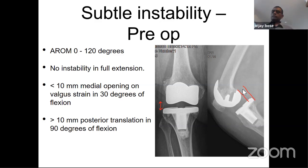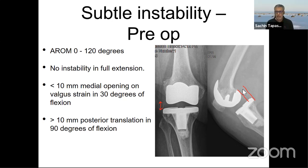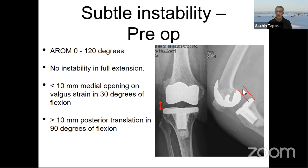Any comments? Sachin, since you made such a wonderful presentation on constraint, how would you tackle this — what would be your first choice? What we are trying to tackle here is posterior instability as well as lateral opening. The lateral opening is not gross, and I think conversion of this prosthesis from a CR to a PS would probably do the trick. I would have an LCCK as a backup, but my primary plan will be to convert it to a straightforward PS.